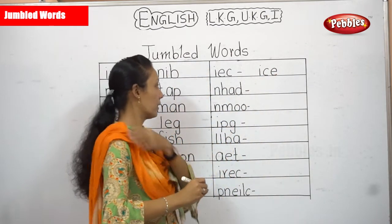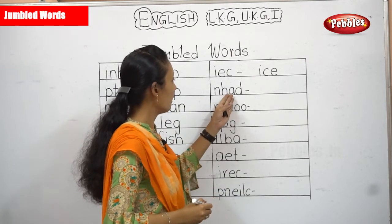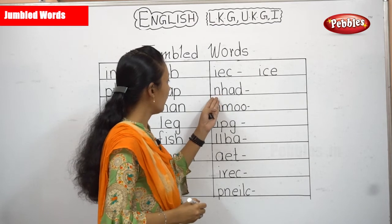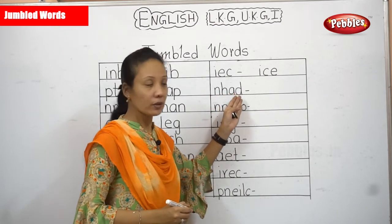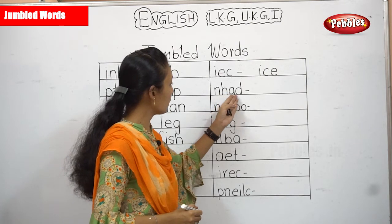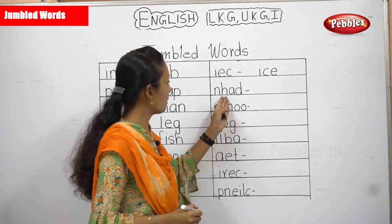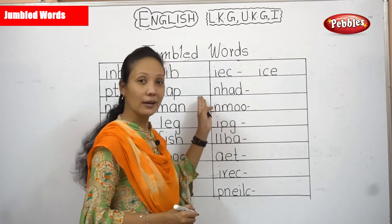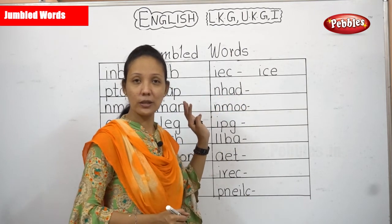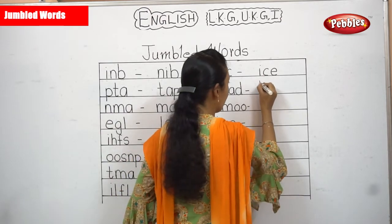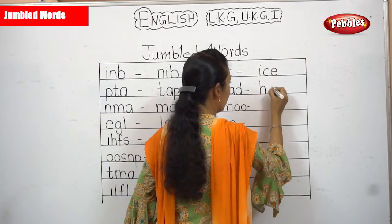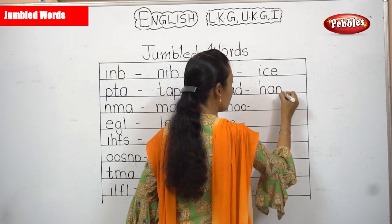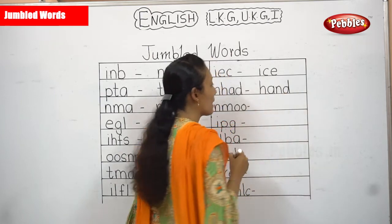Now H, A, D — wait, HEN. H, N, A, D — no. Any A, D, N — no. What spelling can it be? H, A, N, D — HAND! The word is HAND.